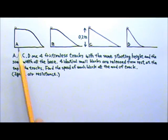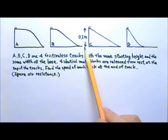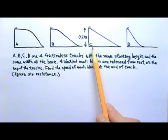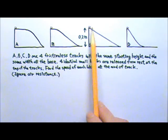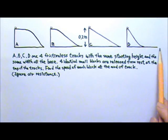Let's try another problem. A, B, C, D are four frictionless tracks with the same starting height of 0.2 meters and the same width at the base. Four identical small blocks are released from rest at the top. Find the speed of each block at the end of track.